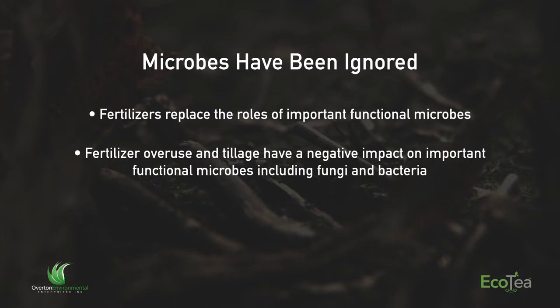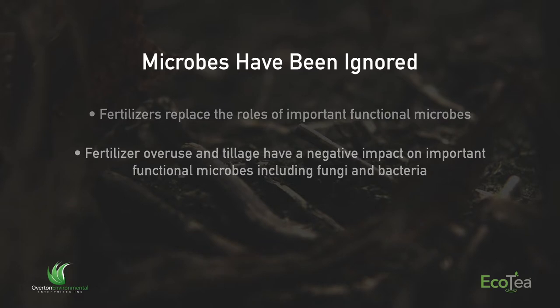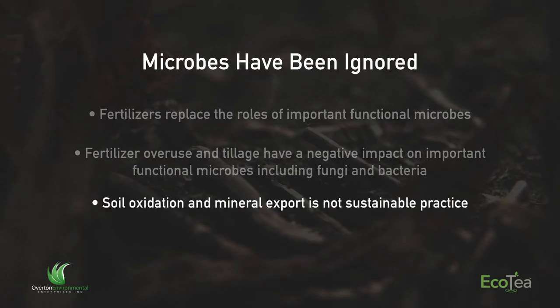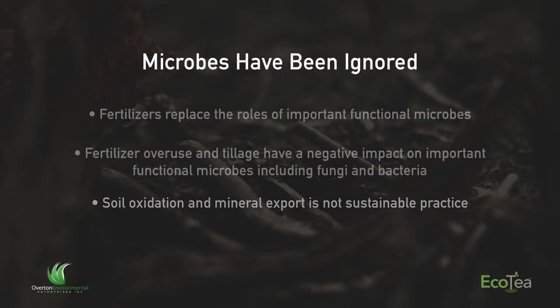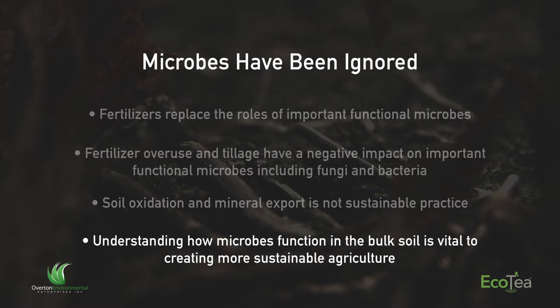Fertilizer overuse and tillage have a negative impact on important functional microbes, mainly bacteria and fungi, causing soil oxidation and mineral export — it's just not sustainable. When you burn your crop residues or export all your straw without putting anything back, you're at a net loss. Over time you're losing organic matter and mineral concentration in your soil, basically mining it — and ultimately you're putting down more and more for less and less return. Understanding how microbes function in bulk soil is vital to creating a sustainable agricultural system.